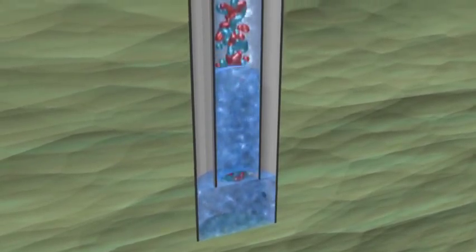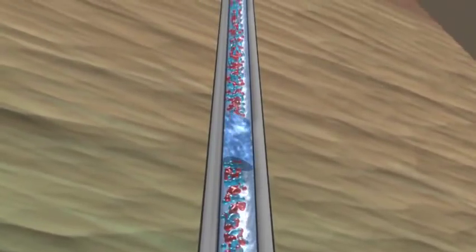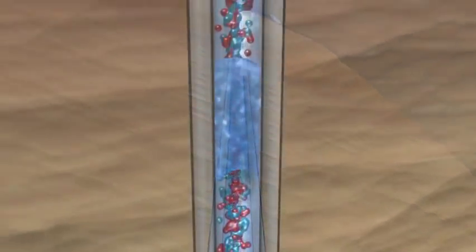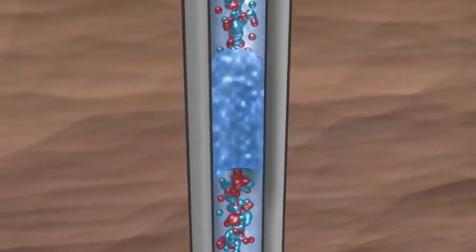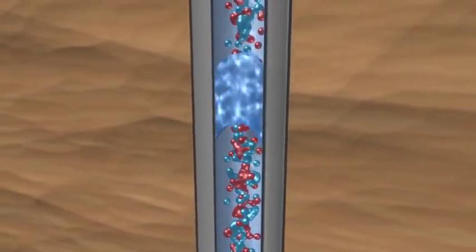As liquid fallback continues, slugs of fluid are periodically produced. As these slugs travel to the surface, as much as 75% of the liquid slug may fall back into the well. And the situation goes from bad to worse.